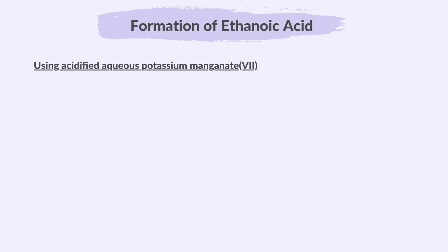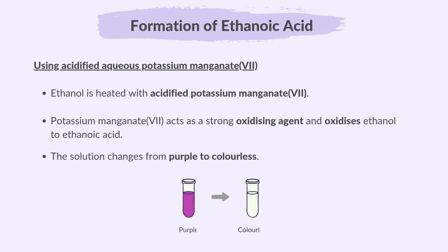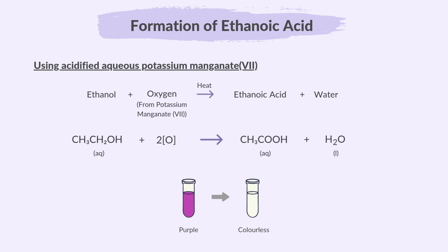In the first method, ethanol is heated with acidified potassium manganate. Potassium manganate acts as a strong oxidizing agent and oxidizes ethanol to ethanoic acid. The solution changes from purple to colorless. The O in brackets in the reaction equation represents the oxygen added by the oxidizing agent.